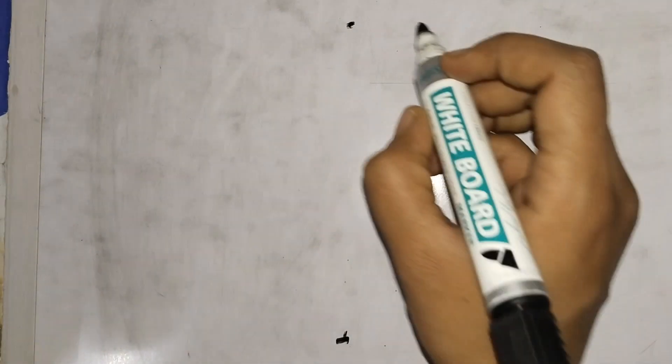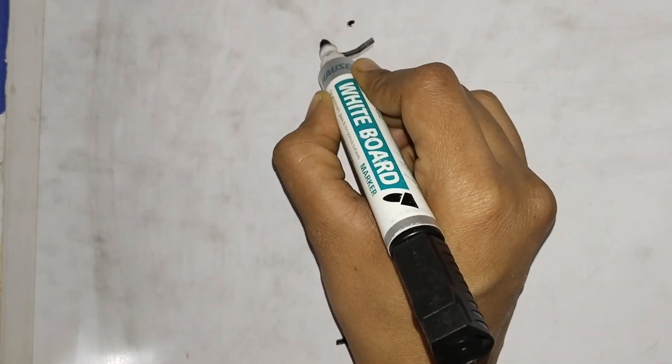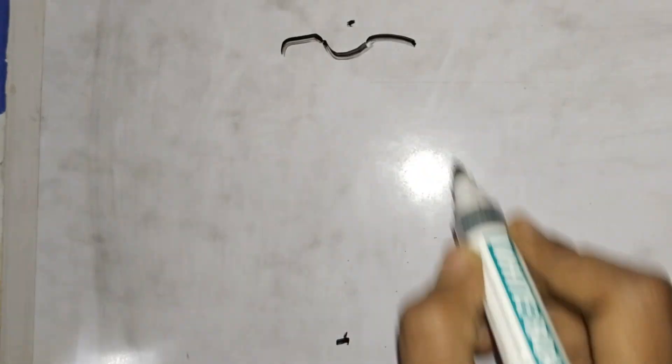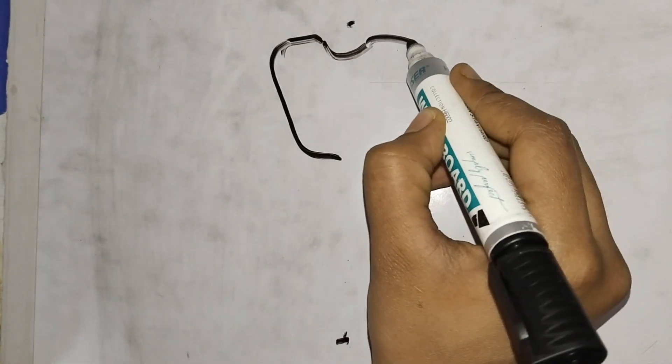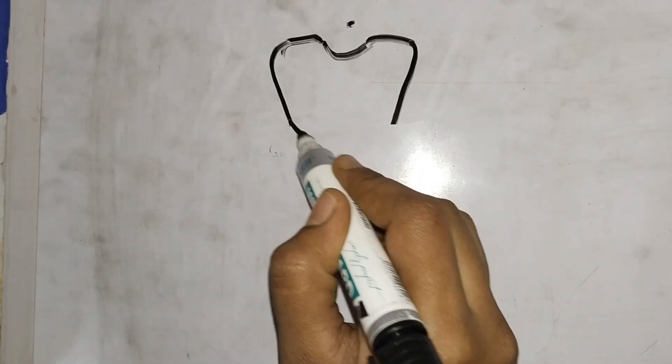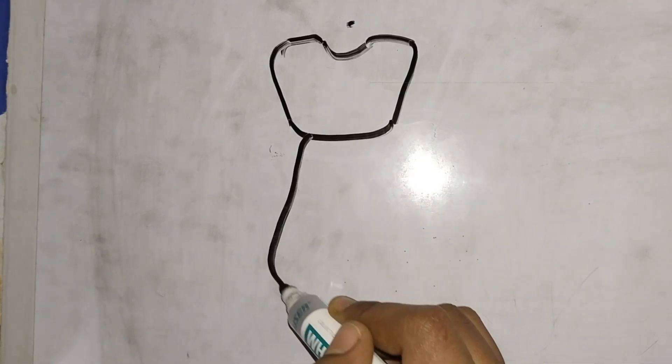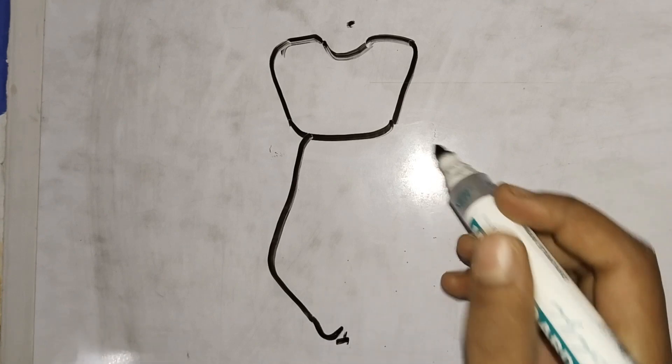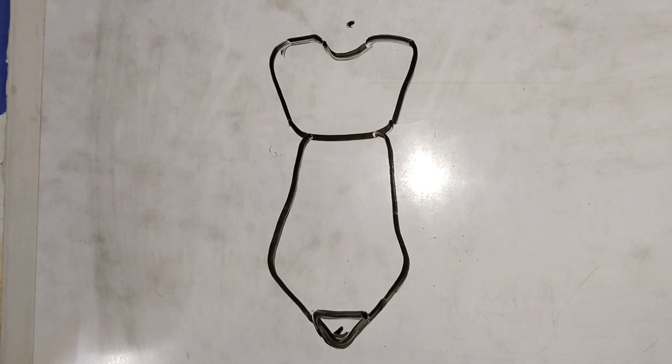So let's start with the jugular notch. Easy, with a small U. Then the extensions will be done. Again we have to make a triangle base. It's a short triangle base. There is a conical structure, a short shape. This will be marked as the xiphoid process. This is the body of the sternum and this is the manubrium.